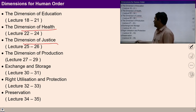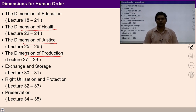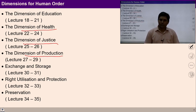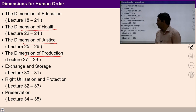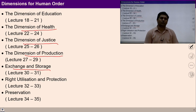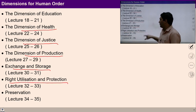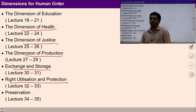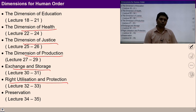Then we talked about the dimension of production where we talked about production, types of production, need of production, process of production, and then policies related to production. We saw the importance of exchange and storage in this human order structure and discussed exchange with the feeling of mutual fulfillment. And then in the previous lecture we talked about right utilization and protection of the produced physical facilities.